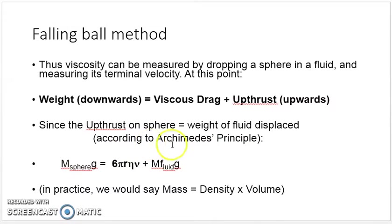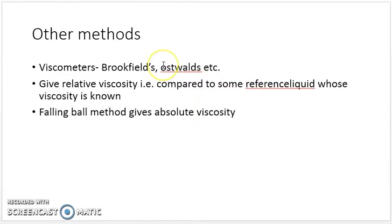This falling ball method is typical and requires some expertise. But for comparing viscosity of various liquids, we have simple methods using viscometers. The most prominent ones are Brookfield's viscometer and Oswald's viscometer.